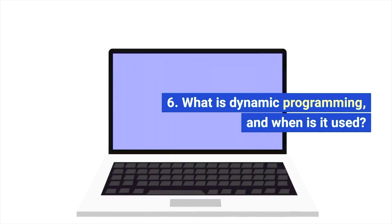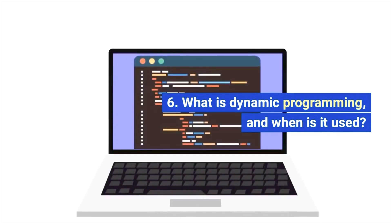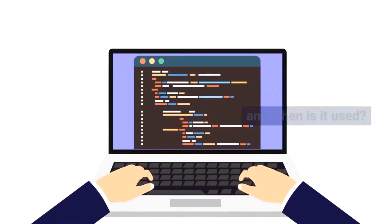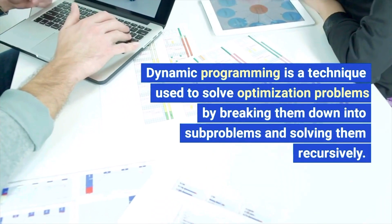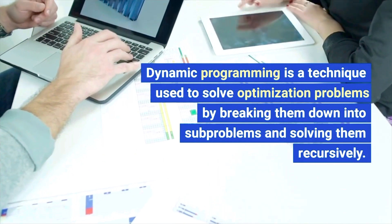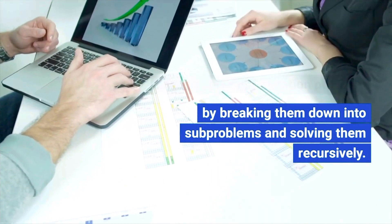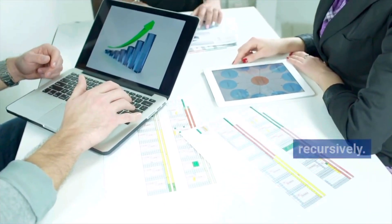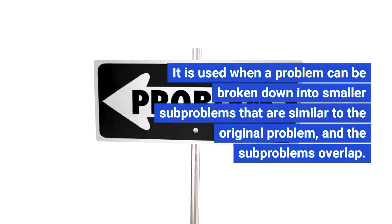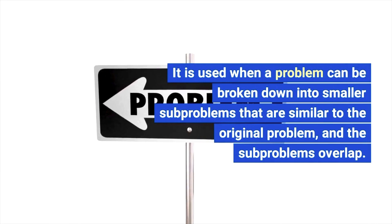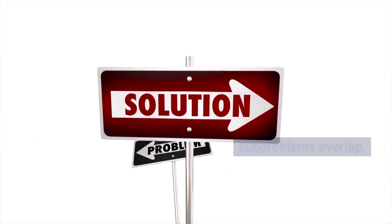Next: what is dynamic programming and when is it used? Dynamic programming is a technique used to solve optimization problems by breaking them down into sub-problems and solving them recursively. A classic example of dynamic programming is the Fibonacci series.